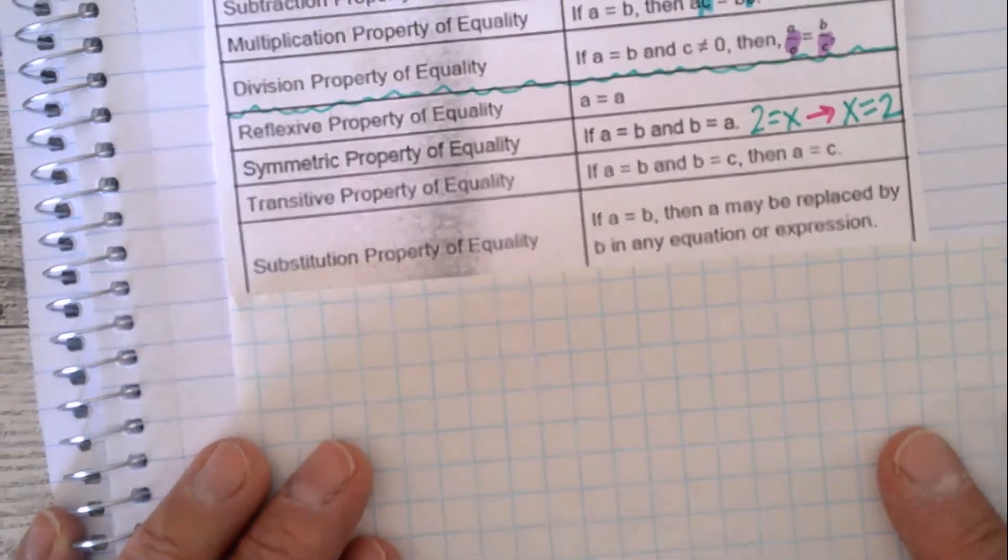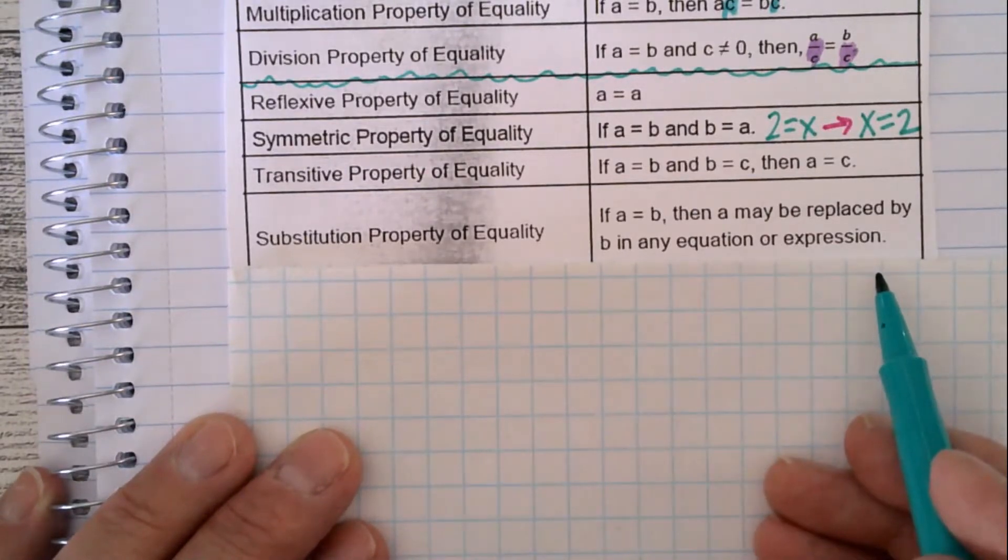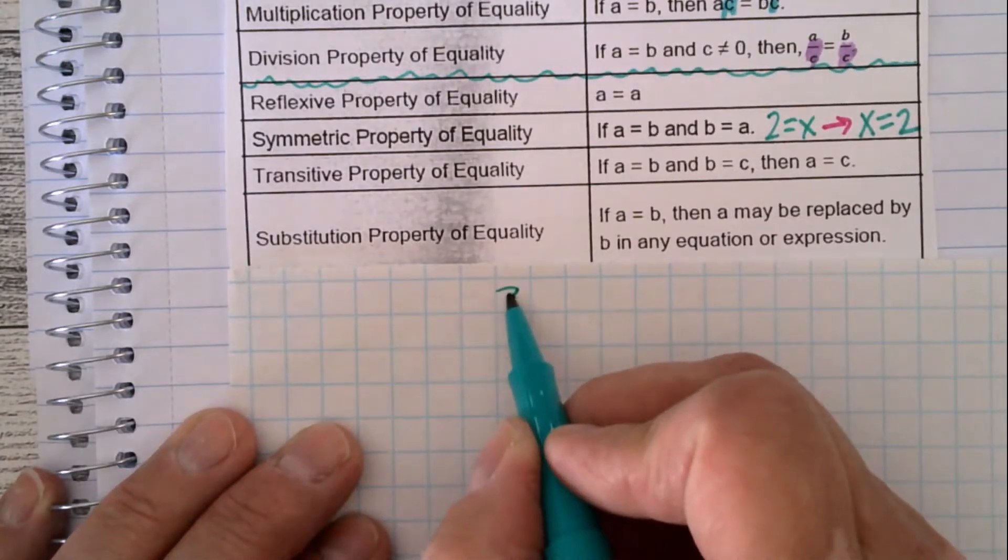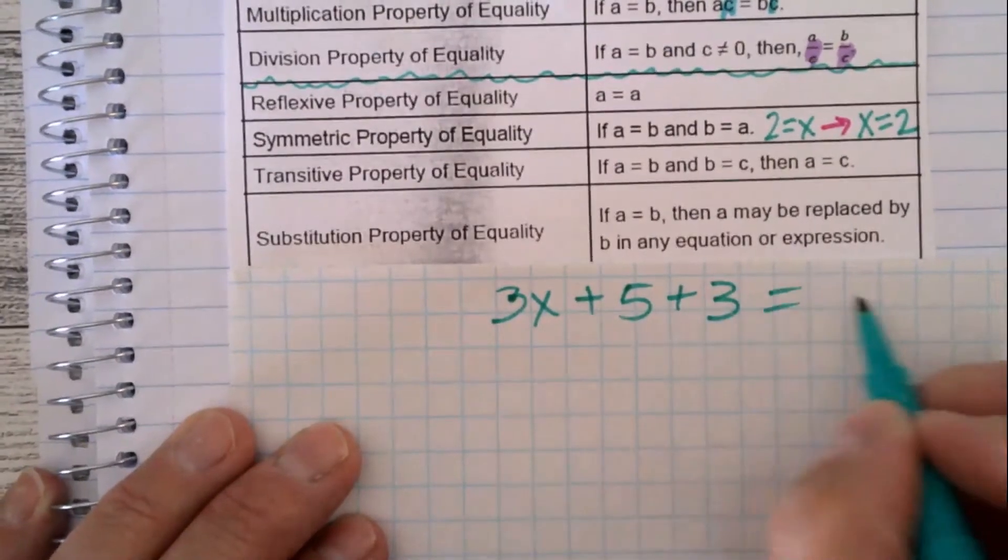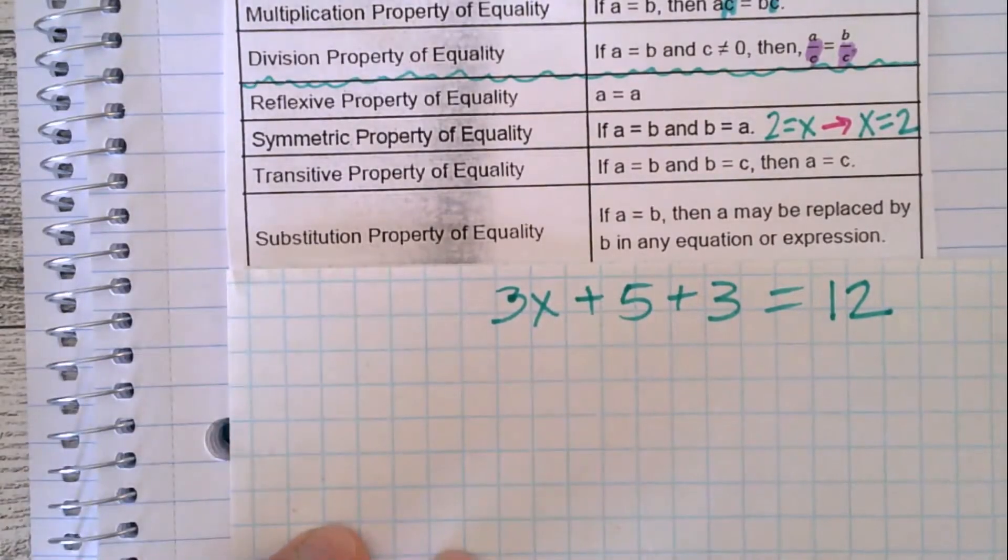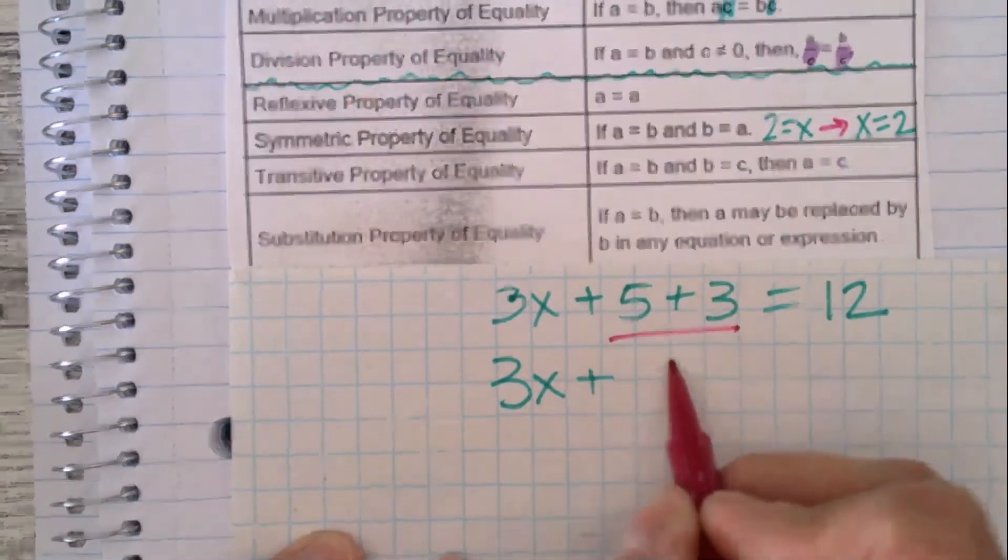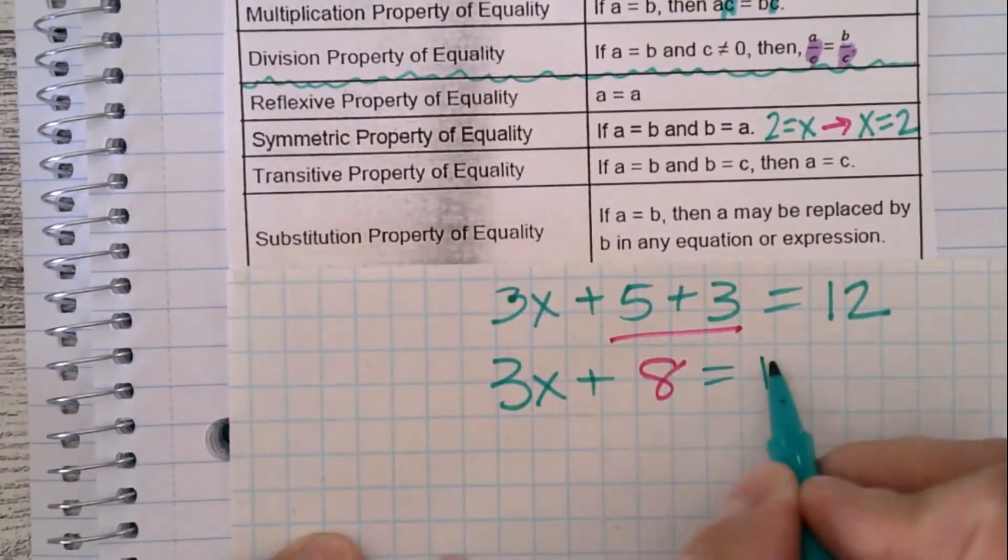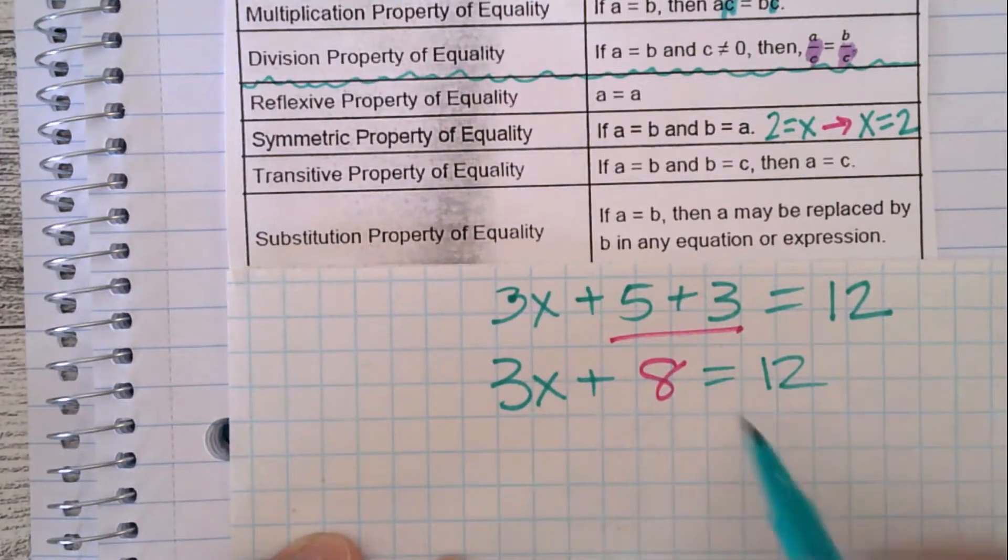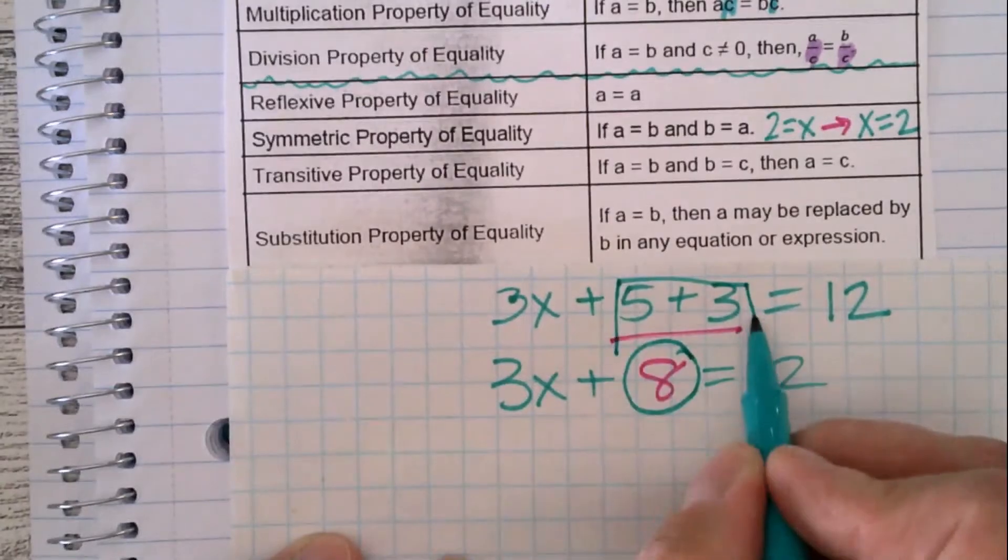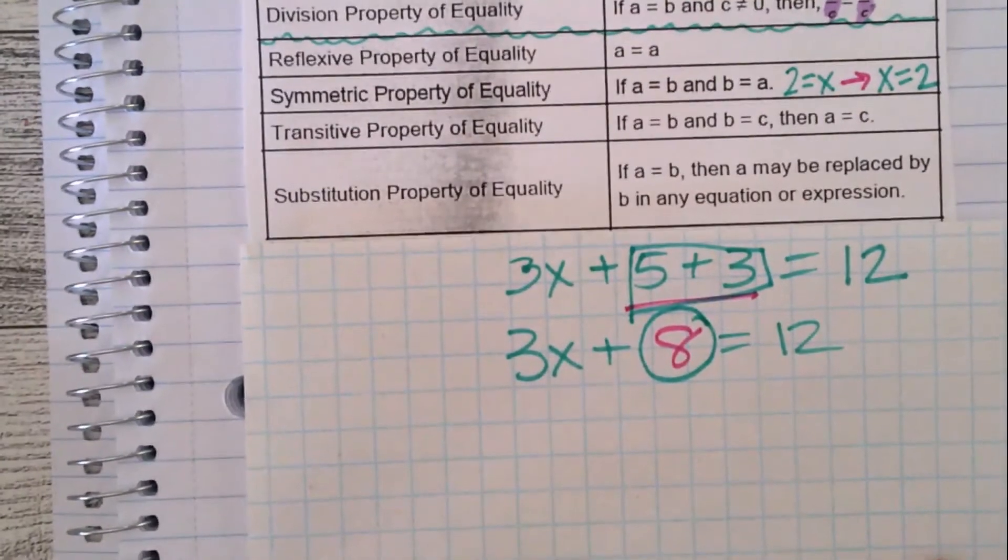So the substitution property of equality, you can use this one in algebra. It says if a equals b, then a may be replaced by b in any equation or expression. So here's an example of when that could happen. Let's say you have 3x + 5 + 3 = 12. And in the next line, you write 3x + 8 = 12 because that's what we would do.